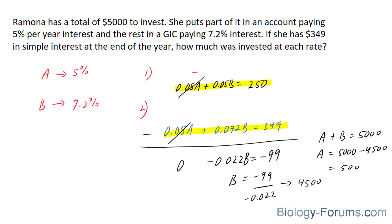Therefore, we can conclude that Ramona invested $500 into A and 4,500 into B.